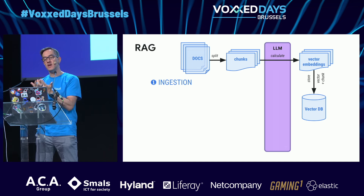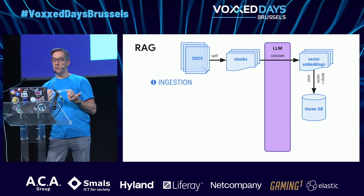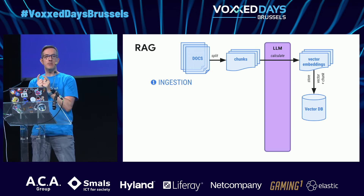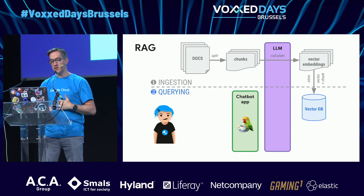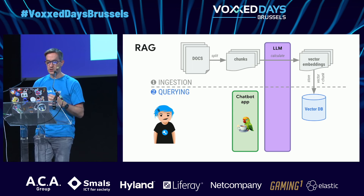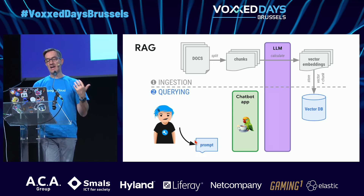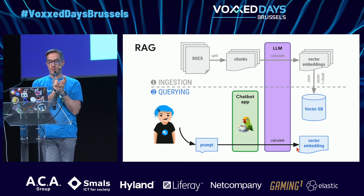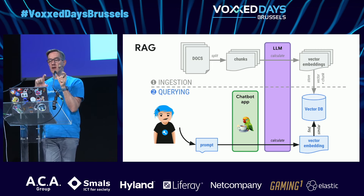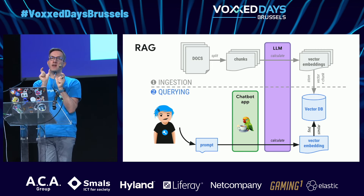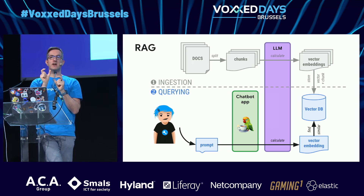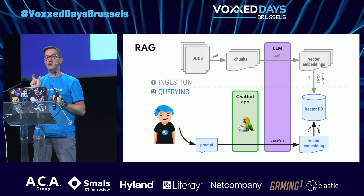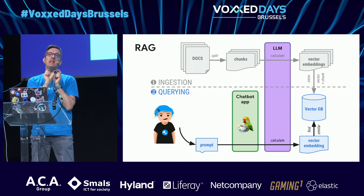In your chatbot application, you ask a question, it calculates the vector embedding for that question, compares the vector representation of the query with data stored in the vector database, and finds the closest vectors. The documentation snippets returned are semantically linked to the query.